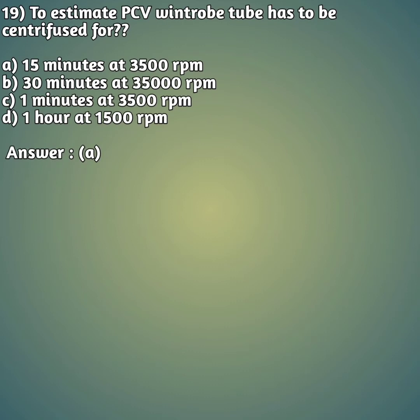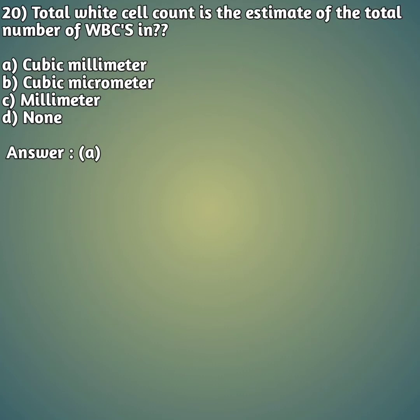Question 19: To estimate PCV, the Wintrobe tube has to be centrifuged for — option A: 15 minutes at 3,500 rpm, option B: 30 minutes at 35,000 rpm, option C: 1 minute at 3,500 rpm, option D: 1 hour at 1,500 rpm. The right answer is option A, 15 minutes at 3,500 rpm.